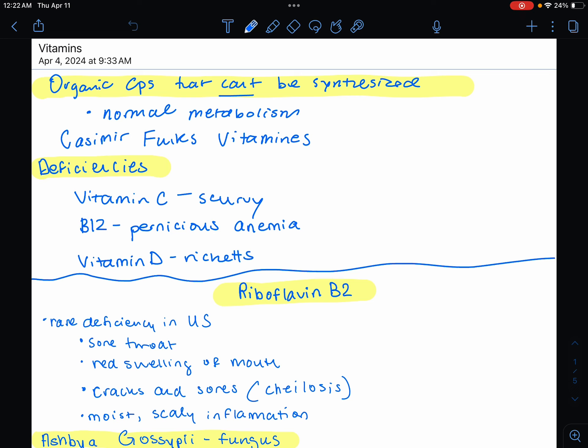This term vitamin was coined in 1911 by chemist Casimir Funk, and he called it a vital amine. However, the E was dropped because the vitamins themselves weren't amines.